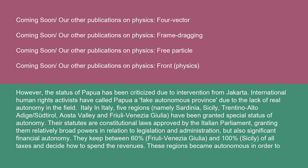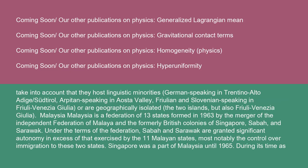They keep between 60% (Friuli Venezia Giulia) and 100% (Sicily) of all taxes and decide how to spend the revenues. These regions became autonomous in order to take into account that they host linguistic minorities — German-speaking in Trentino-Alto Adige/Südtirol, Arpitan-speaking in Aosta Valley, Friulian and Slovenian-speaking in Friuli Venezia Giulia — or are geographically isolated, such as the two islands, but also Friuli Venezia Giulia.